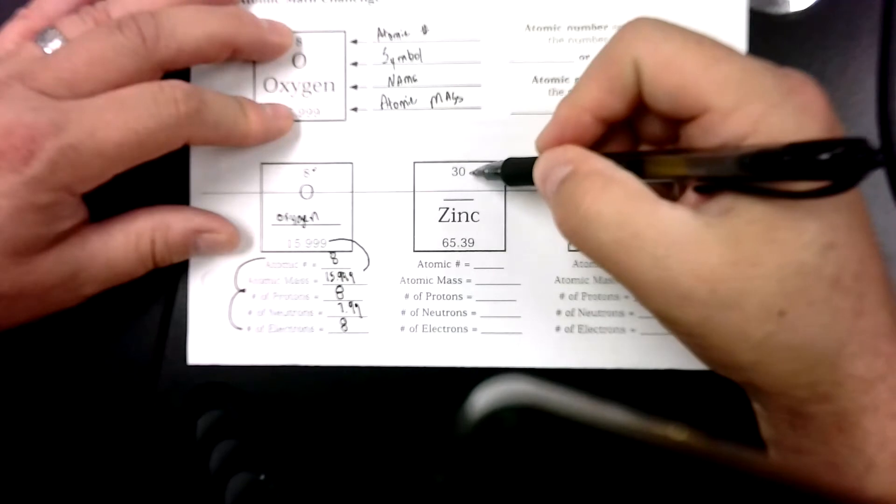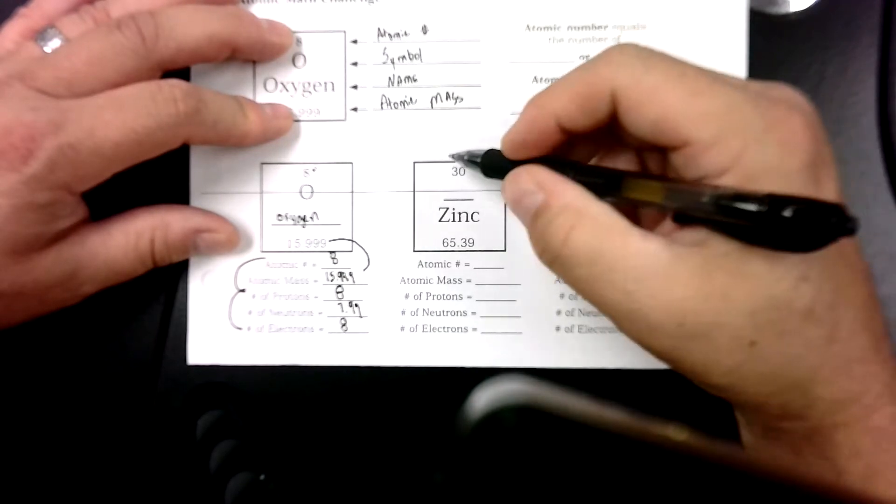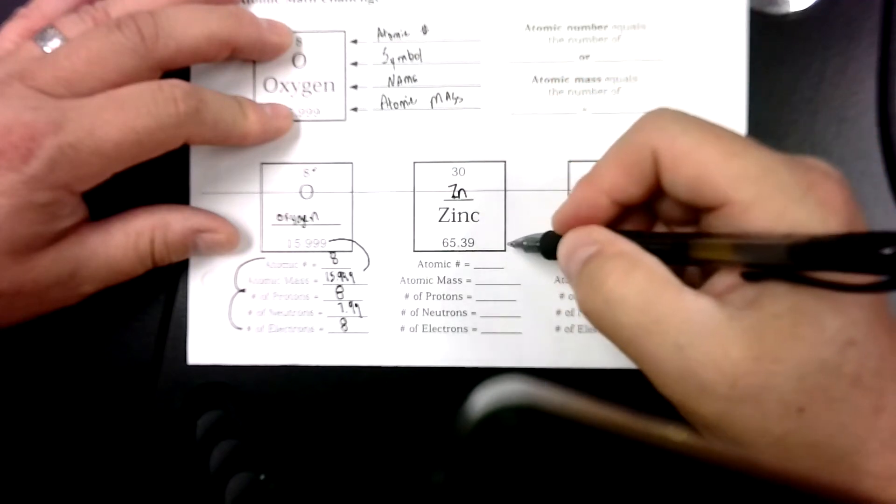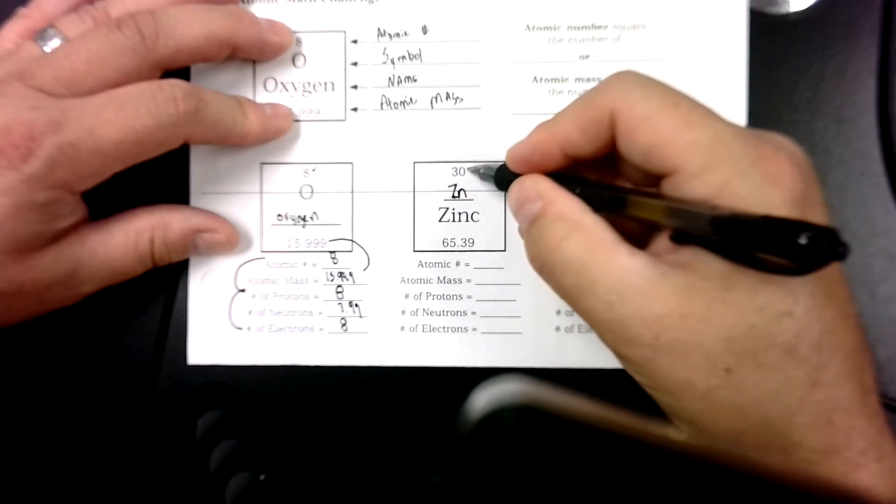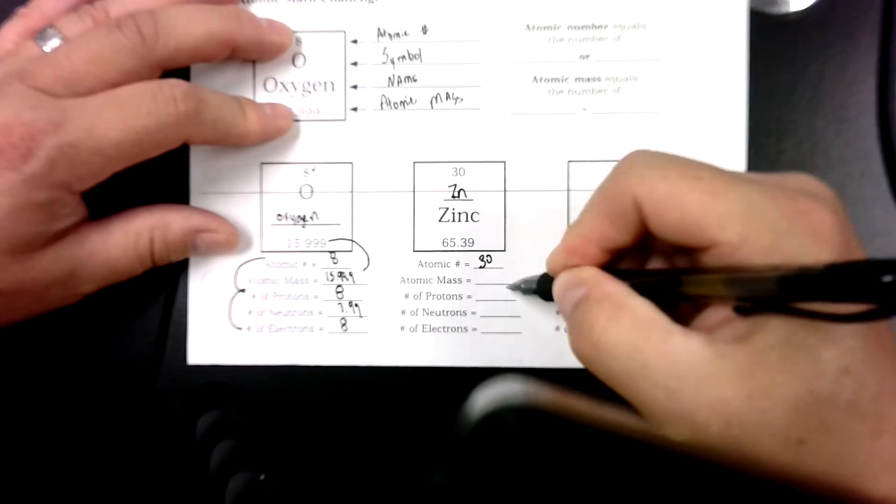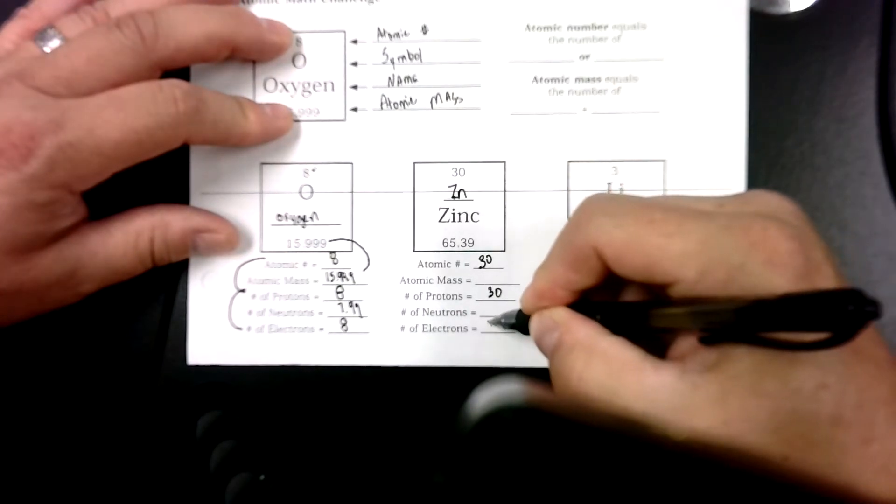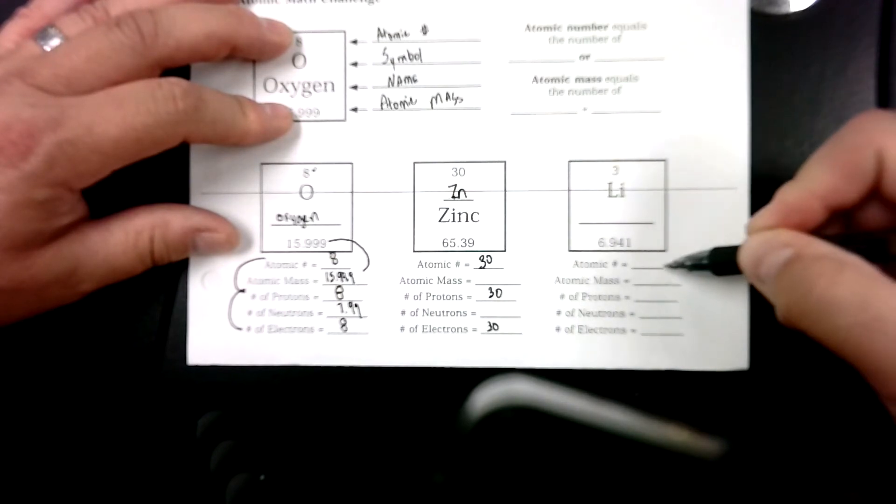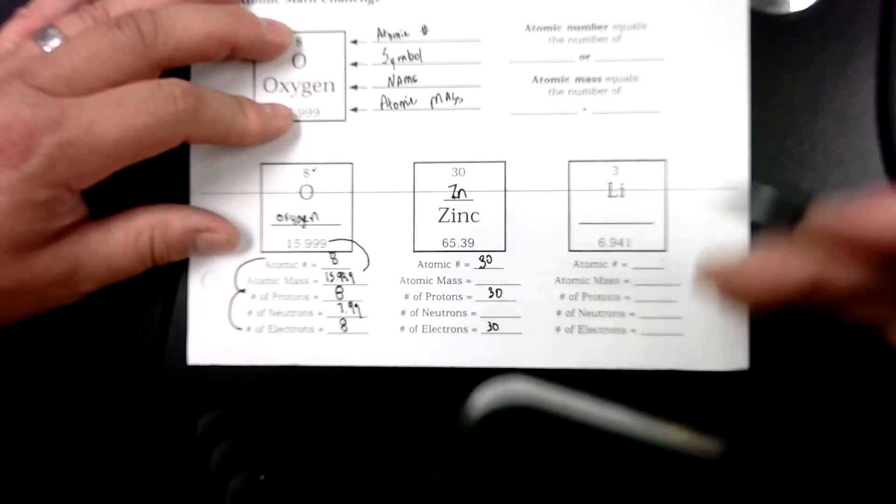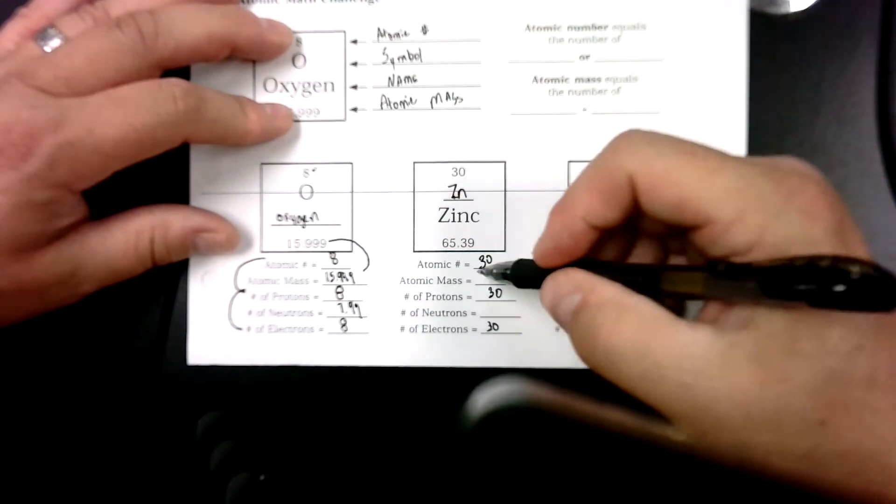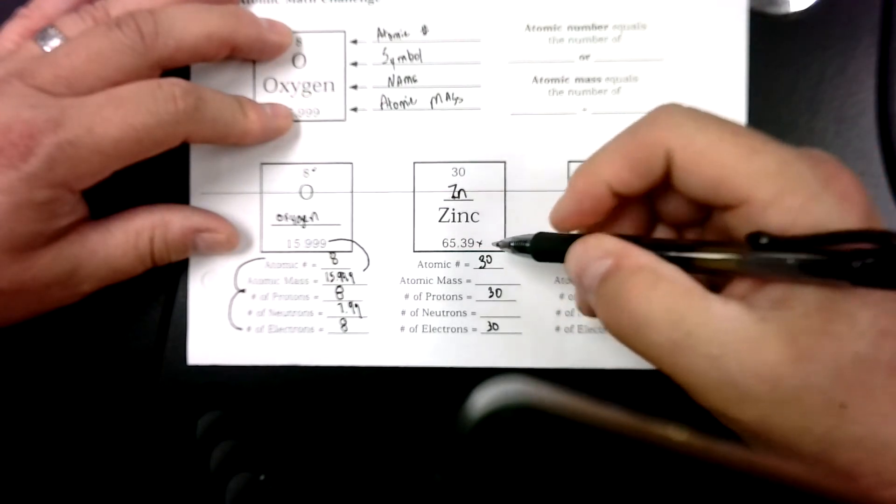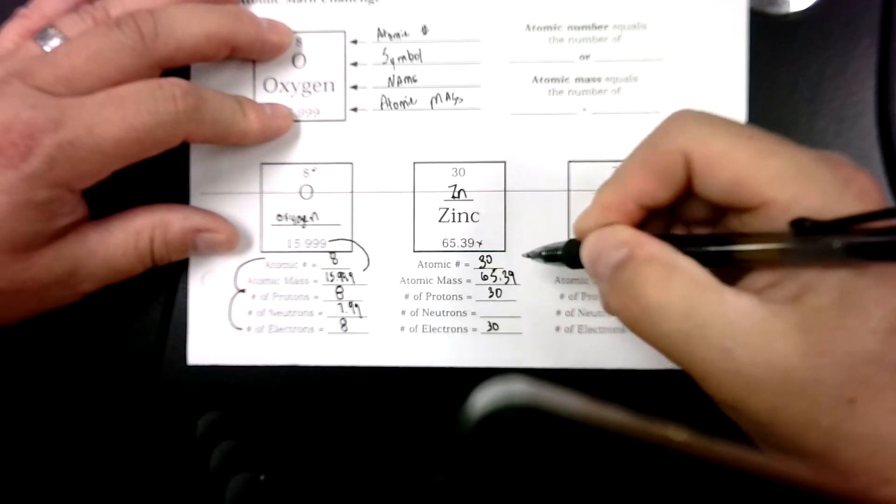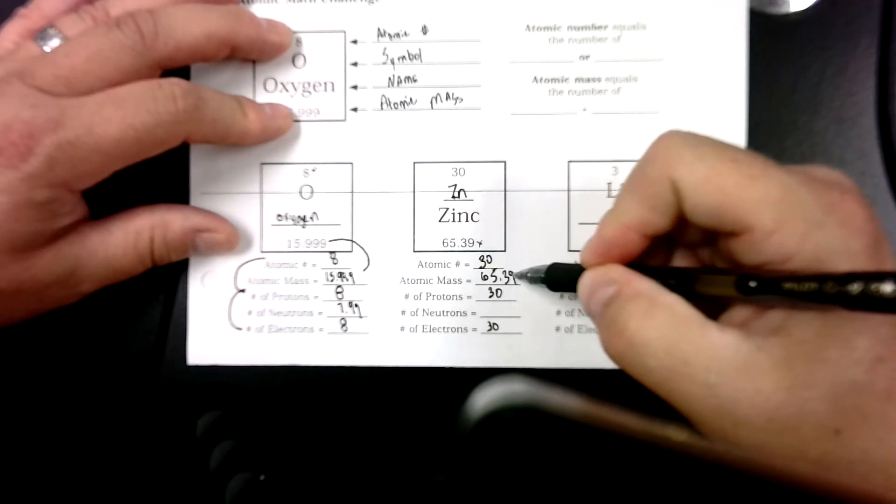Okay, again, for zinc, the abbreviation for zinc is Zn. You can get that from your periodic table if you need it. Atomic number is here, so that's 30, which means I have 30 protons and I have 30 electrons. Those are always going to be the same. I can do the whole worksheet and just transfer this number on the top to the number of protons and electrons for the whole sheet. Mass is always this number here, so 65.39. And we find our neutrons by subtracting our mass minus our protons, and we get 35.39.